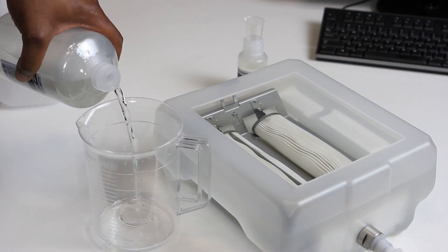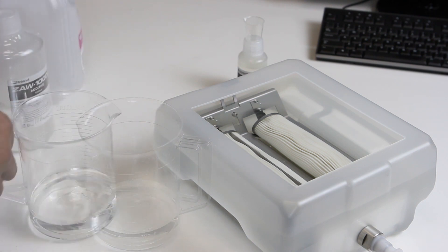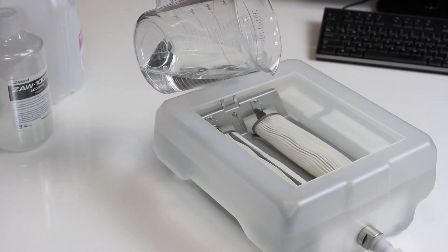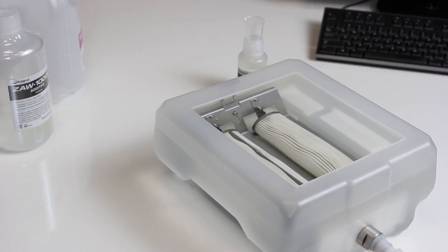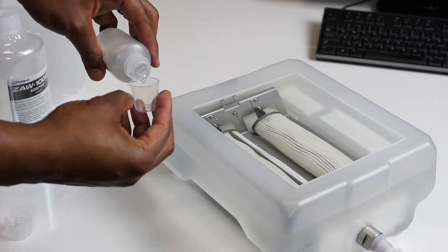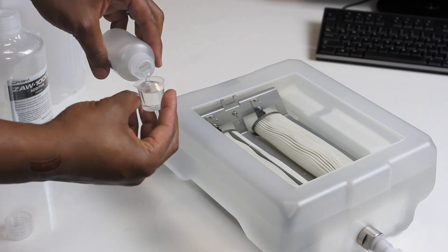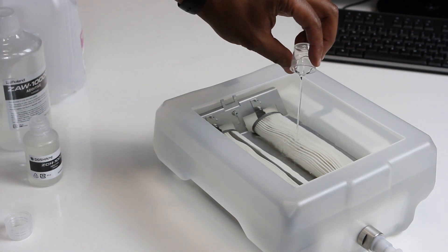Next, pour in 250 milliliters of coolant additive. Finally, using the small measuring cup, pour in 12.5 milliliters of chelate agent.